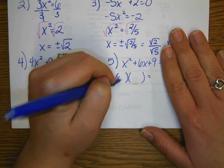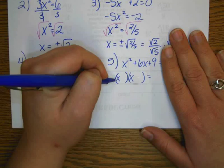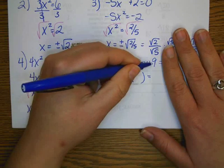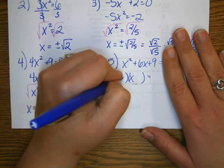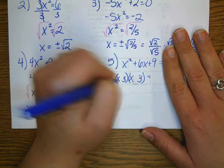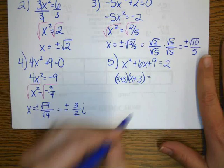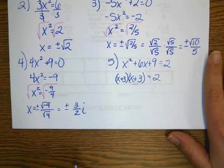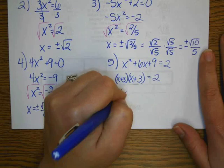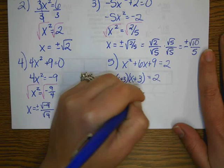which means you can square root the front. Square root of x squared is x and x. And what are multiples of 9 that add up to 6? And that's 3 and 3. So you have a positive 3 and a positive 3.